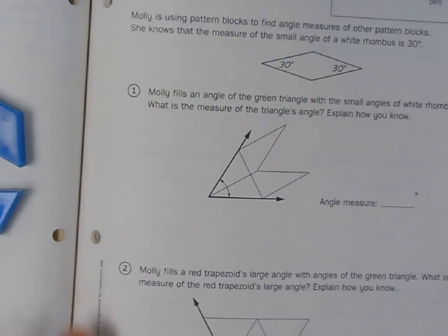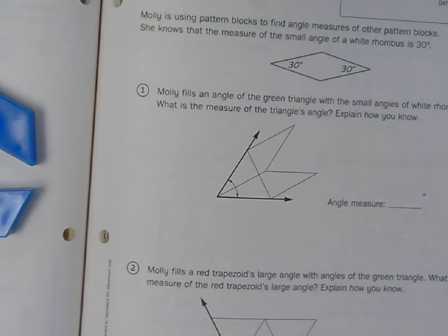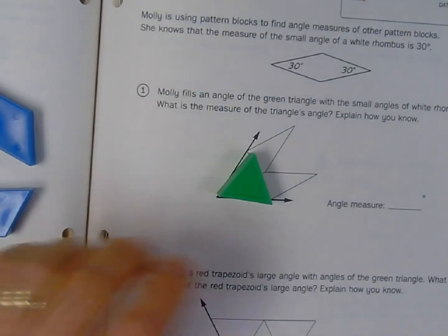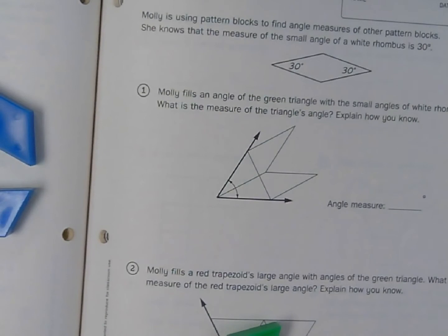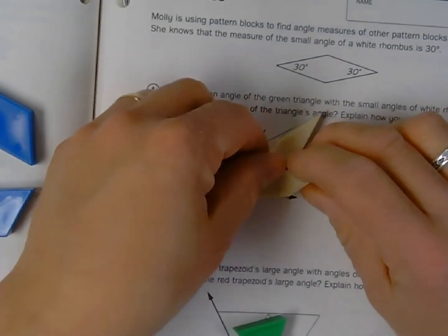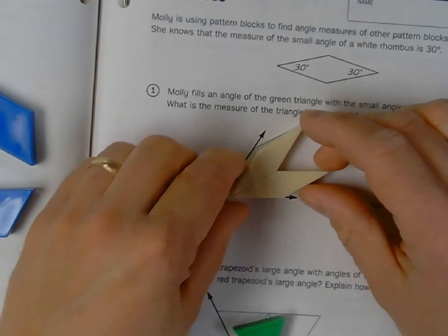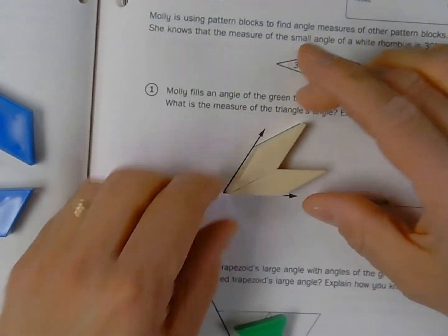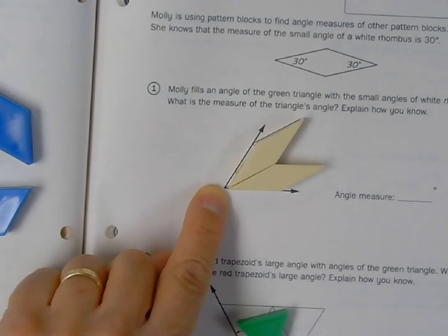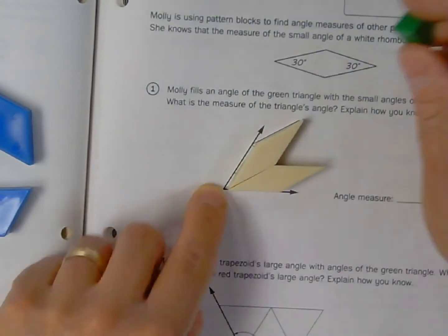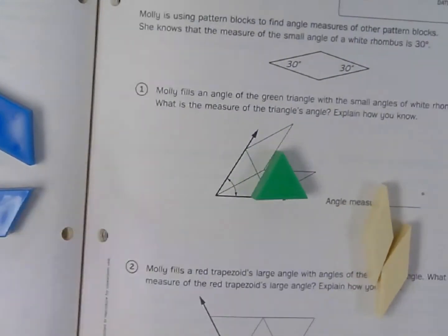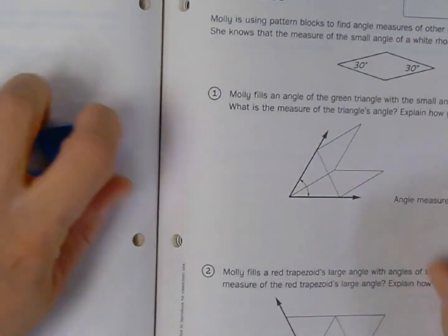In question number one it says Molly fills an angle of the green triangle with the small angles of the white rhombuses, what is the measure of the triangle's angle and explain how you know. When I put those there you can see that they fill up the same space in this corner, this vertex.